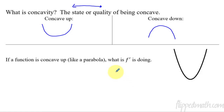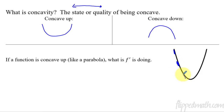So if you have a function like a parabola that's concave up — this is y equals x squared — what is f prime doing? f prime is the slope of the tangent at a specific point. Let's think about a tangent line. This tangent is negative, this tangent is negative, right here the tangent is still negative but not quite as negative. And then we get to the bottom and we have a horizontal tangent line, so slope is zero. f prime would be zero. And now f prime is positive, more positive, and more positive.